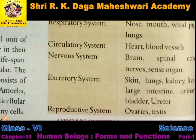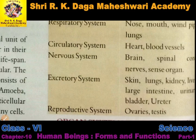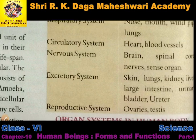Whatever functions our body parts are performing, whatever tasks they are doing, it is only because our brain has ordered them to perform all these functions. The nervous system is responsible for giving these orders and making desired functions happen. The next is the excretory system - the waste material from our body needs to be removed, and removing that waste material is the job of the excretory system, whether liquid or solid waste.